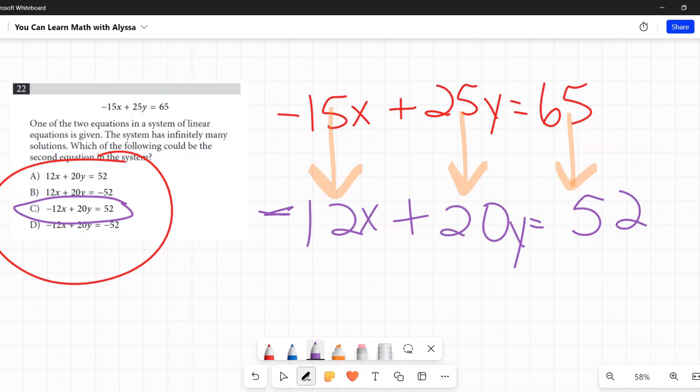So there's really no calculation or math required on this one. They did that for you by telling you 12, 20, 52 are the three numbers. Just check those signs. They have to be the same as the original and that's your answer.